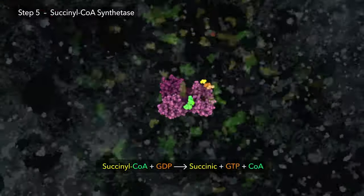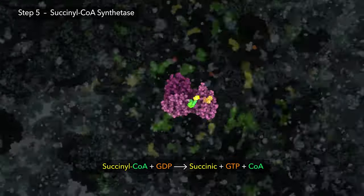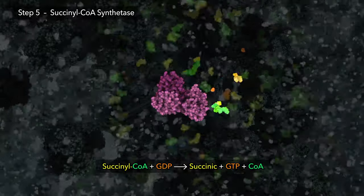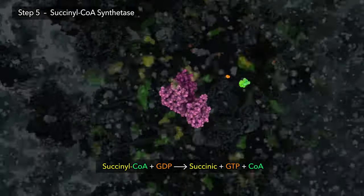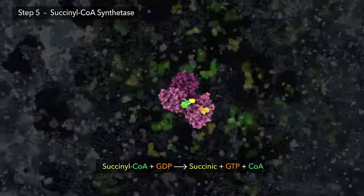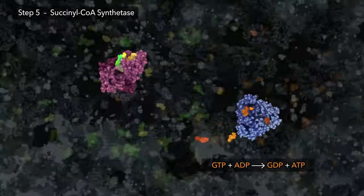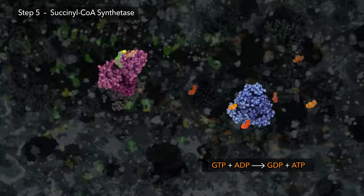Enzymes of step five cleave succinyl-CoA, providing enough energy to create GTP. GTP is a building block of RNA and an energy source for protein synthesis. In the most direct path to ATP from the citric acid cycle, other enzymes in the matrix can use GTP to make the chemical fuel ATP.